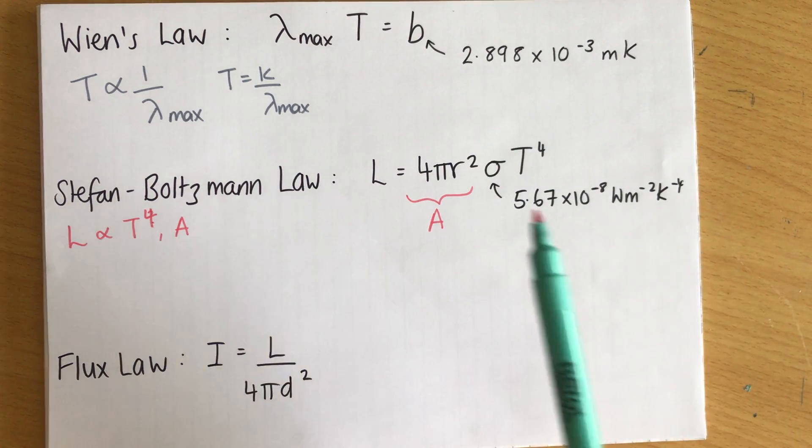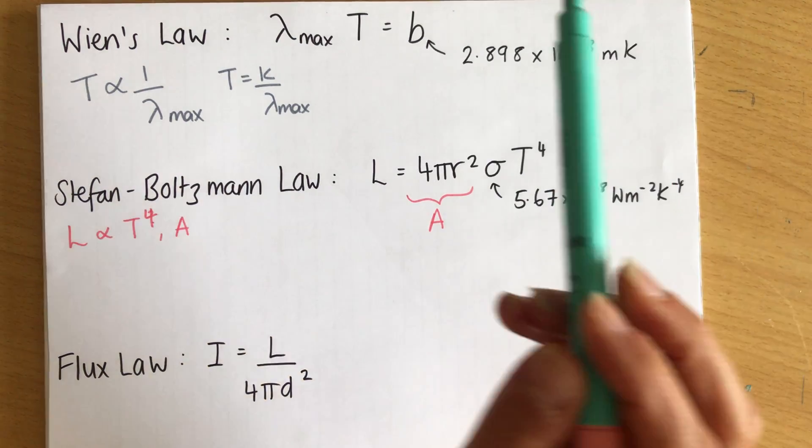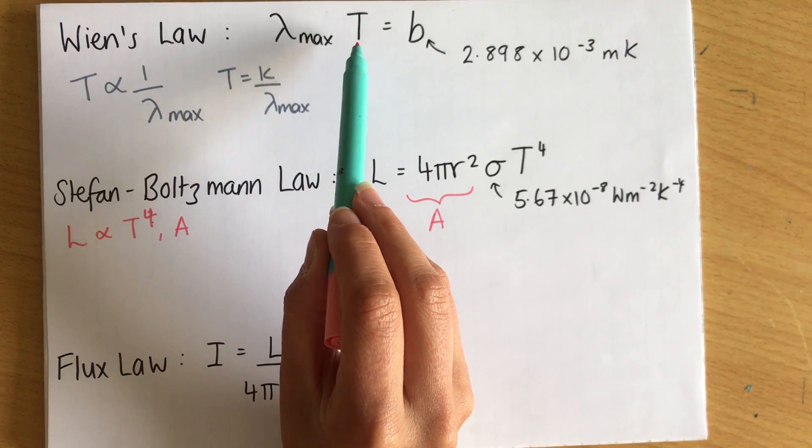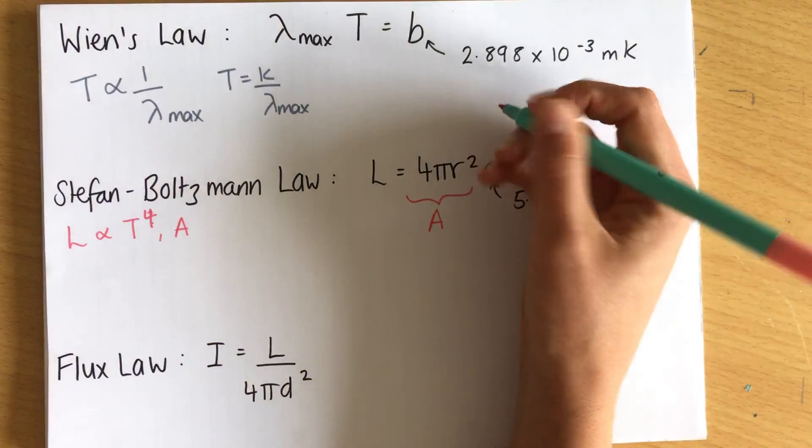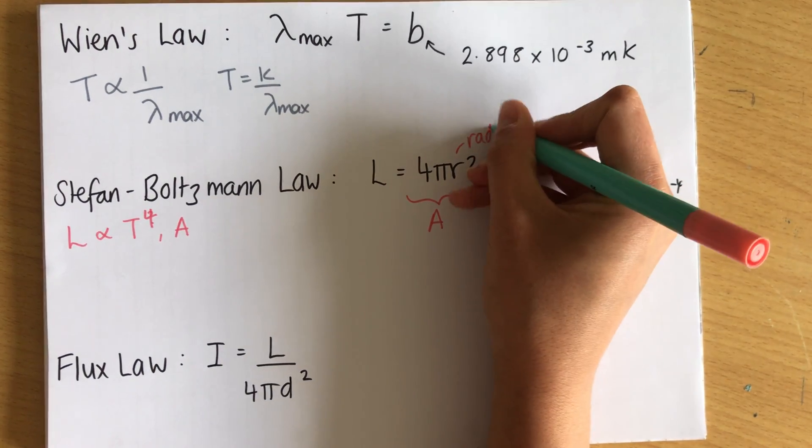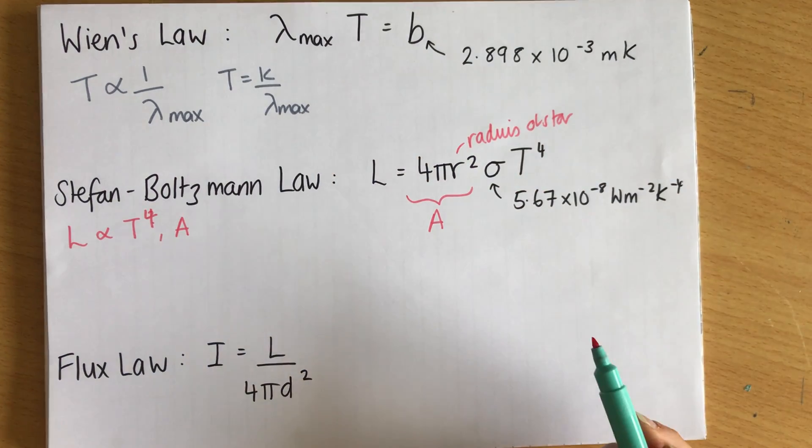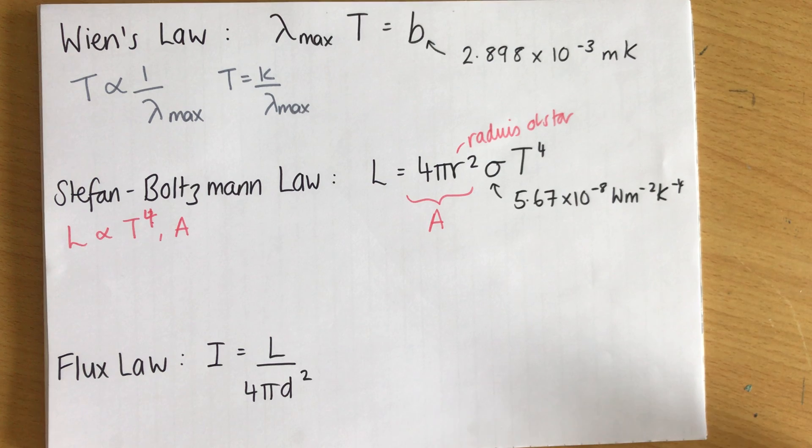So the Stefan Boltzmann law relates luminosity and temperature. And remember, if I know the peak wavelength of the star, I can work out the temperature, which means I'm going to find it easier to get the luminosity. I still need to know r. Now r is the radius of the star. So I need to know the size of the star. But I'm closer to getting the luminosity. And once I know the luminosity, it becomes a standard candle. And standard candles are really useful for working out distances to stars. So it's all linking together.